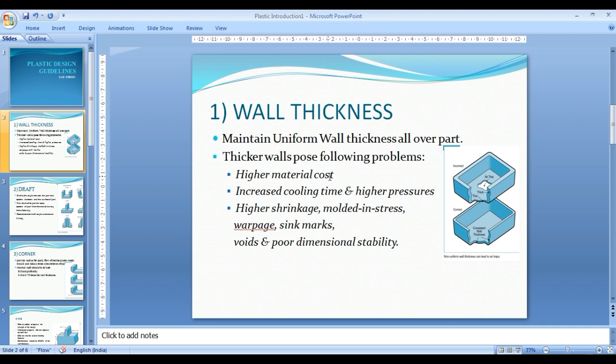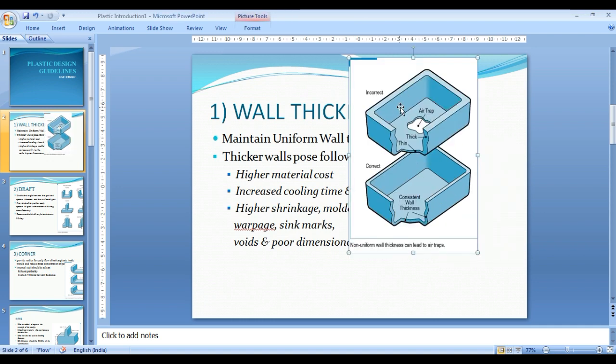Higher material cost, increased cooling time, and higher pressure required for thicker walls. Higher shrinkage, molding stresses, warpage, sink marks, and poor dimensional stability. These defects are created because of non-uniform wall thickness. This example shows an incorrect object with non-uniform wall thickness.